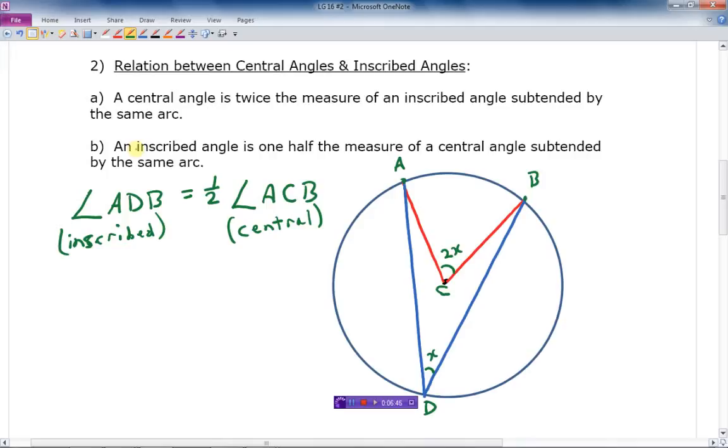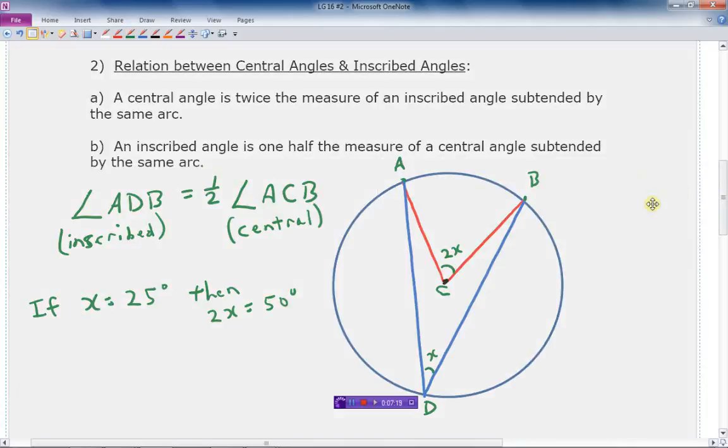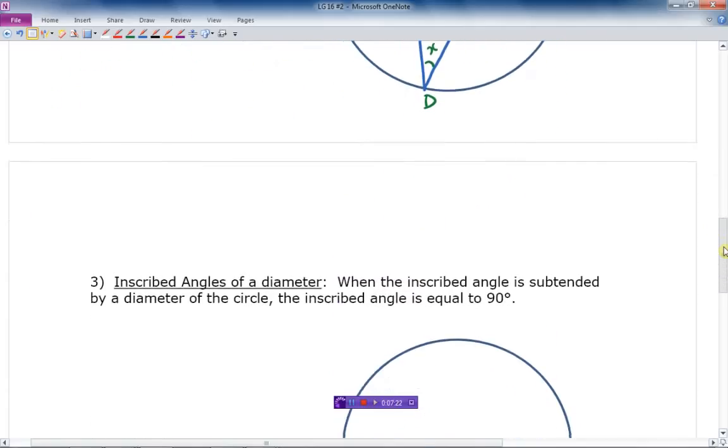And so just one quick thing there. So if X equals 25 degrees, then 2X equals 50 degrees. Makes sense. So if the inscribed angle is 25 degrees, the central angle is double that. It's 50 degrees. So I hope you kind of catch that idea. It comes in really handy in solving certain kinds of problems. And so let's move on to one more thing here before we do an example.